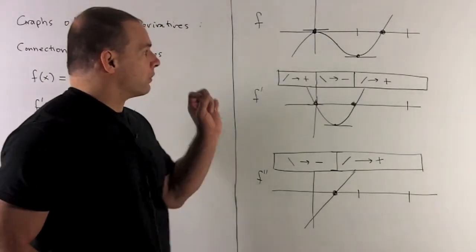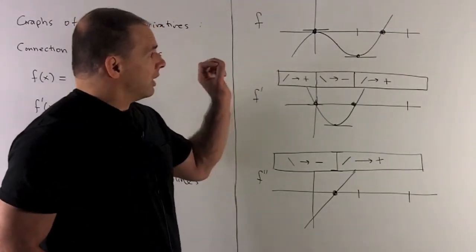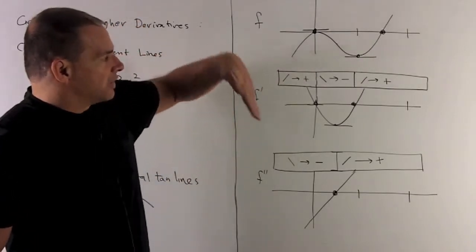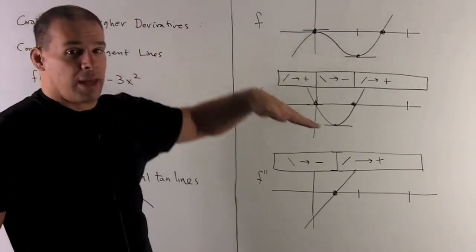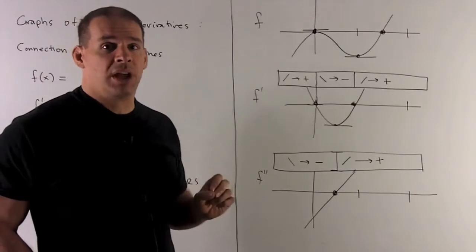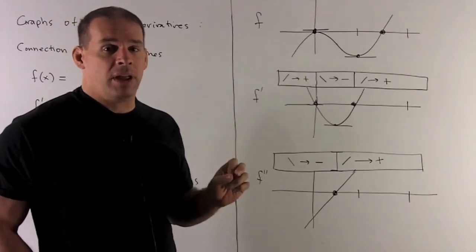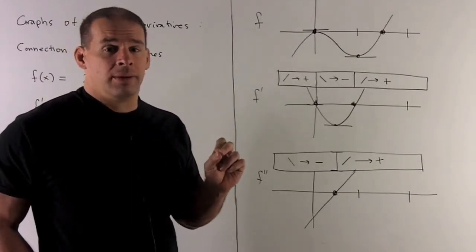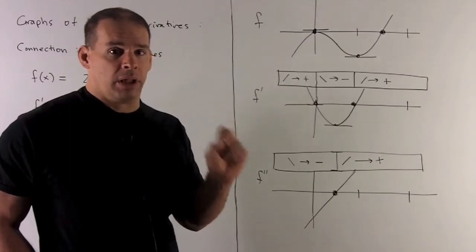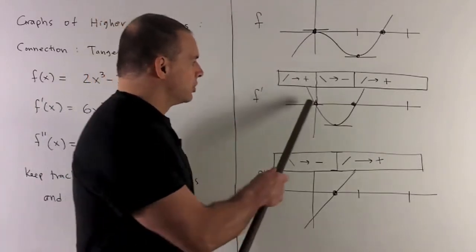Now, when I go from 0 to 1, you'll notice, okay, here, our tangent lines are all like this. So that means we have negative slopes, which means when I go to f prime and we take a look at what's happening, the values of f prime will all be below the x-axis.